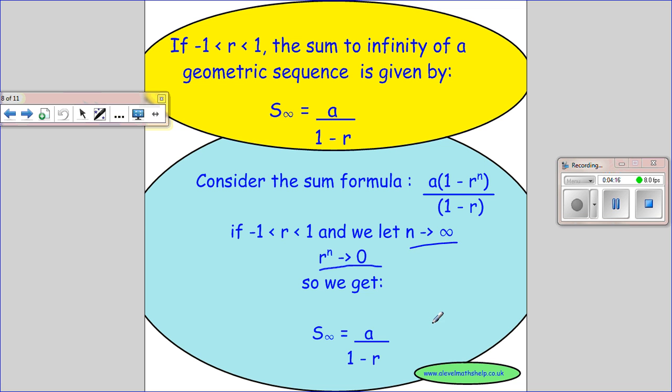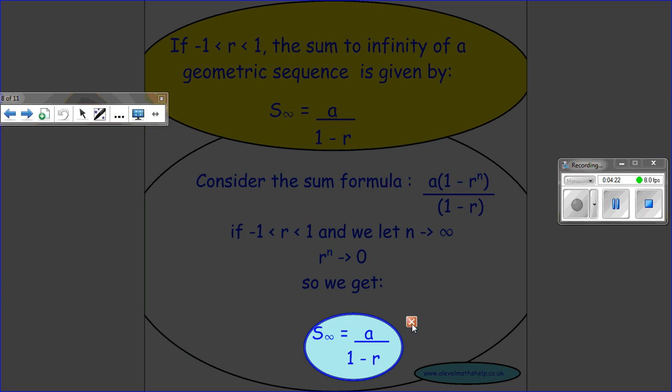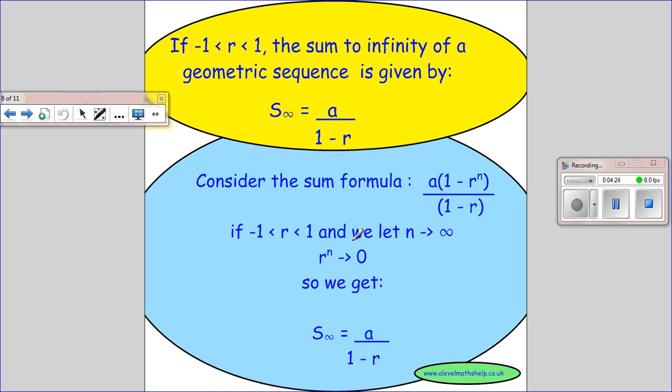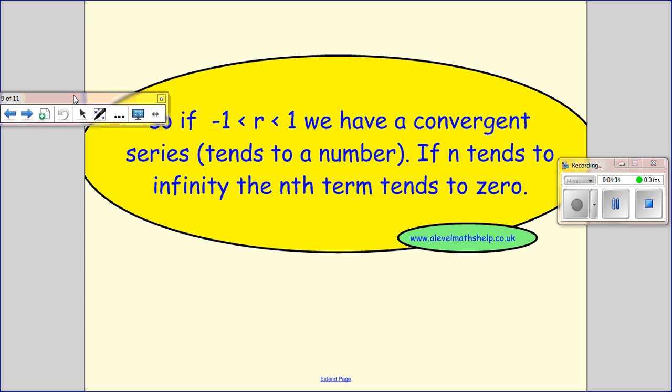And so this bit disappears, and we're just left with the a over 1 minus r. And of course, if we don't restrict our r, when we have, like, 2 to the power of a million, we don't get something which goes to 0. We get something which goes to something very, very, very big. And then there's another term which is even bigger.